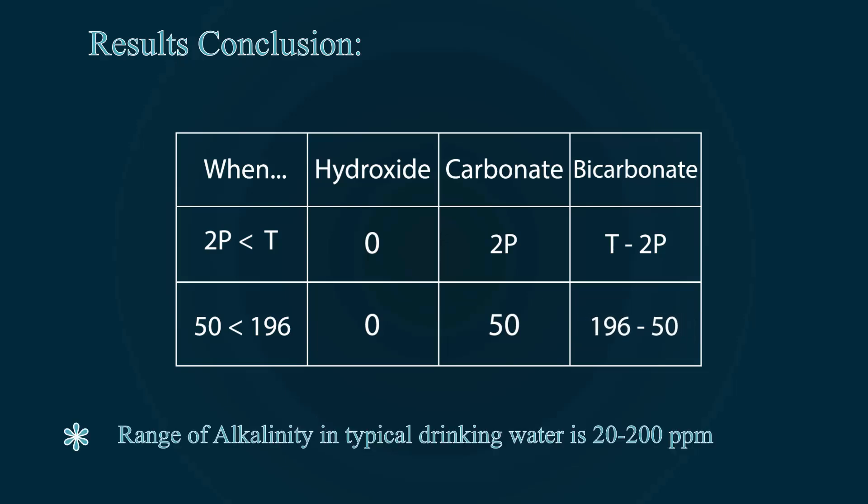The range of alkalinity in typical drinking water is between 20 and 200 ppm. Please like and subscribe our channel for other informative videos. Thank you.